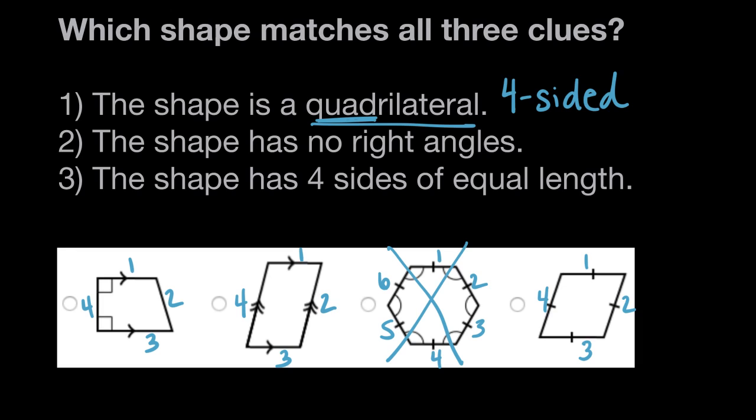Looking at clue two, it says our shape has no right angles. Right angles are also 90-degree angles, and they look something like this.